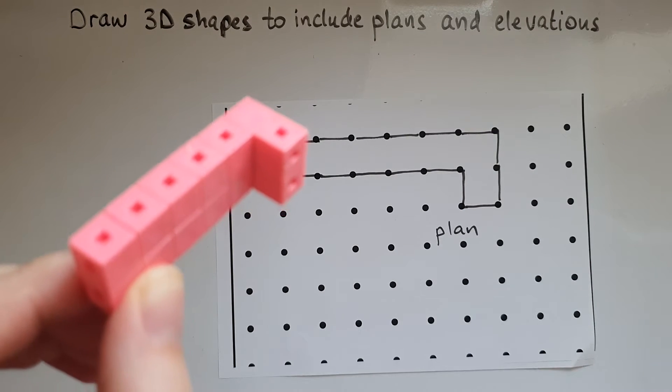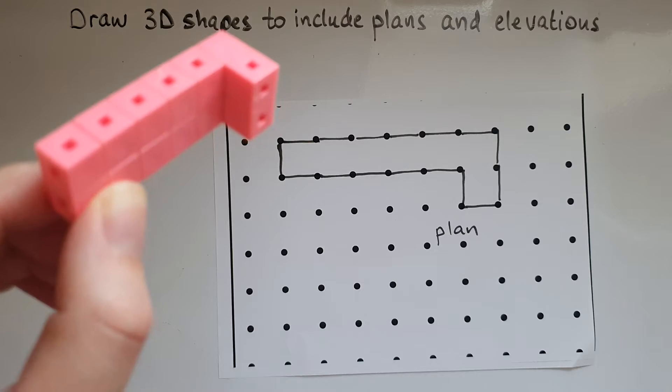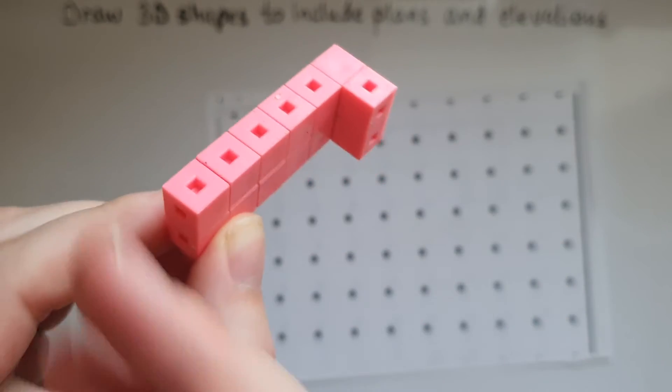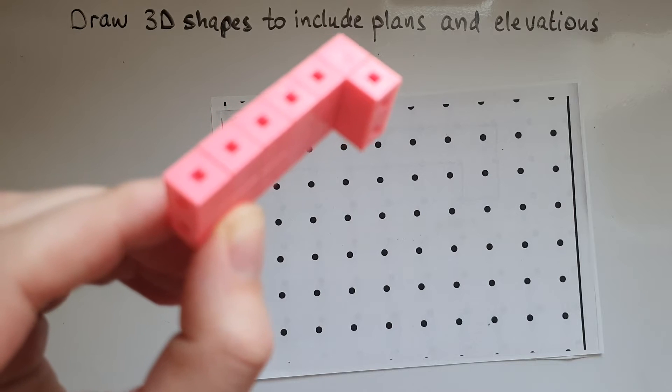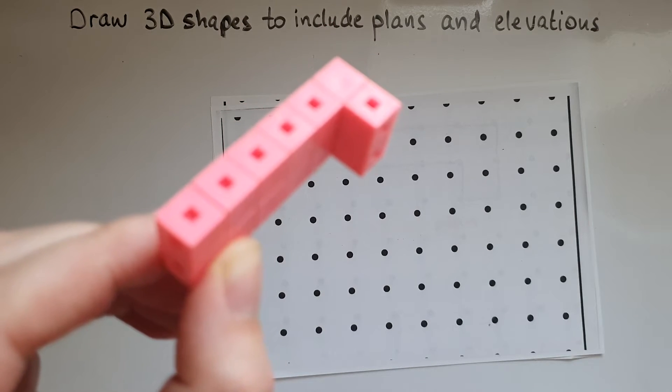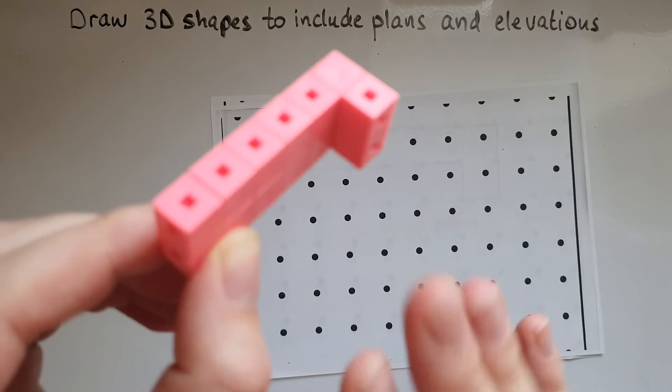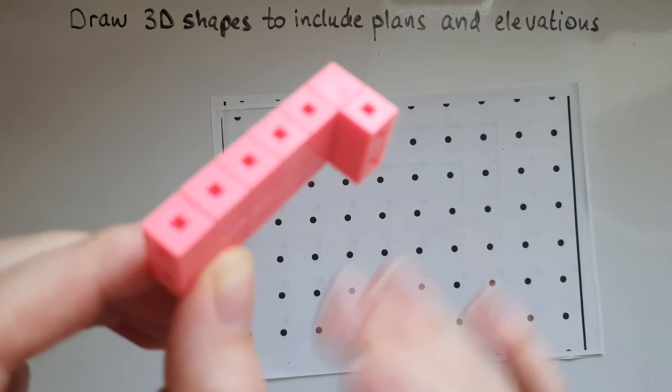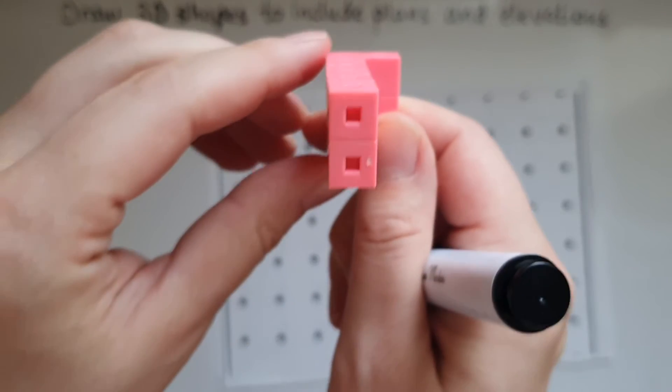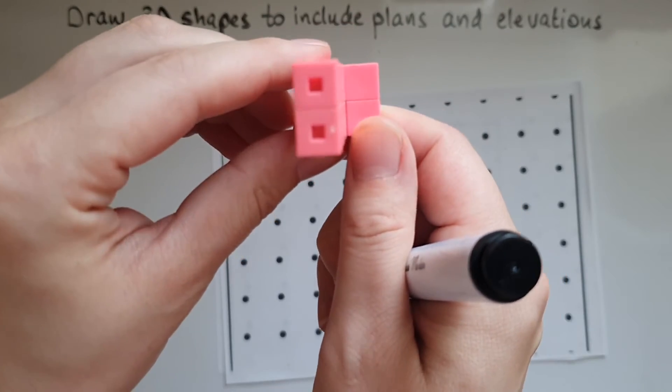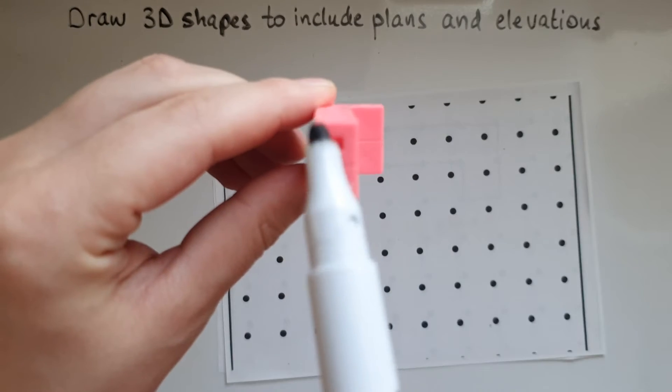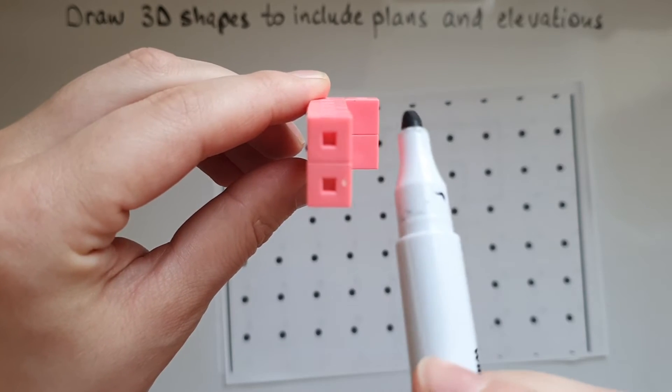Now we'll do the front elevation of the shape. So front, another way to look at it is more to the left. Front is to the left and the side elevation is to the right. So what can you see? I can see a square of two units by two units.